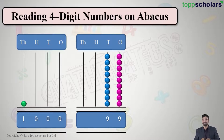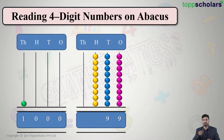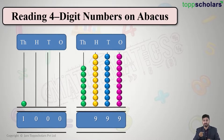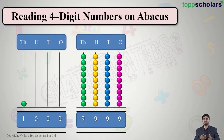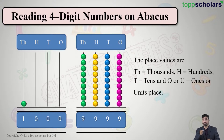Similarly, in the hundreds place the beads keep coming, and if we count them we again get nine. And in the thousands column, if we add up all the beads there are nine beads. So basically we have formed the number nine thousand nine hundred and ninety-nine.